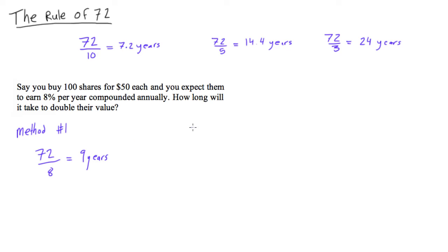Now if we have method number two, we'll just use the future value of an investment. We have the formula FV equals PV times 1 plus I to the power of n. And in this case, we can just fill out these. So future value, well future value is going to be twice the present value. So maybe we should do present value first.